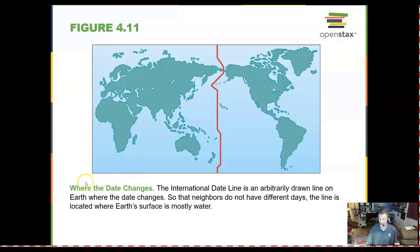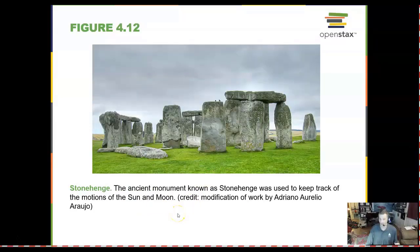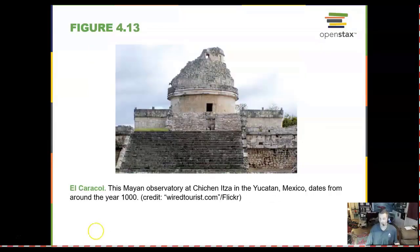The date changes at the international dateline out in the open waters. Stonehenge is a very ancient monument that was used to track the motions of the sun and moon — if you ever go to England, be sure to go to Stonehenge. This is a very old observatory in Mexico that dates around the year 1000.